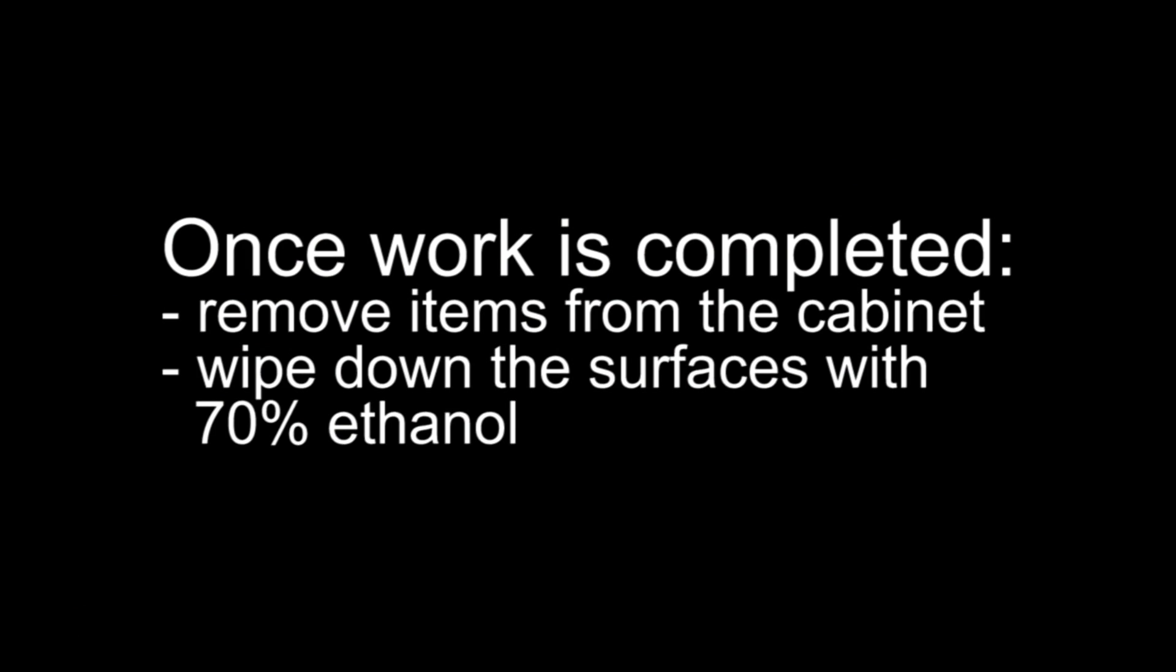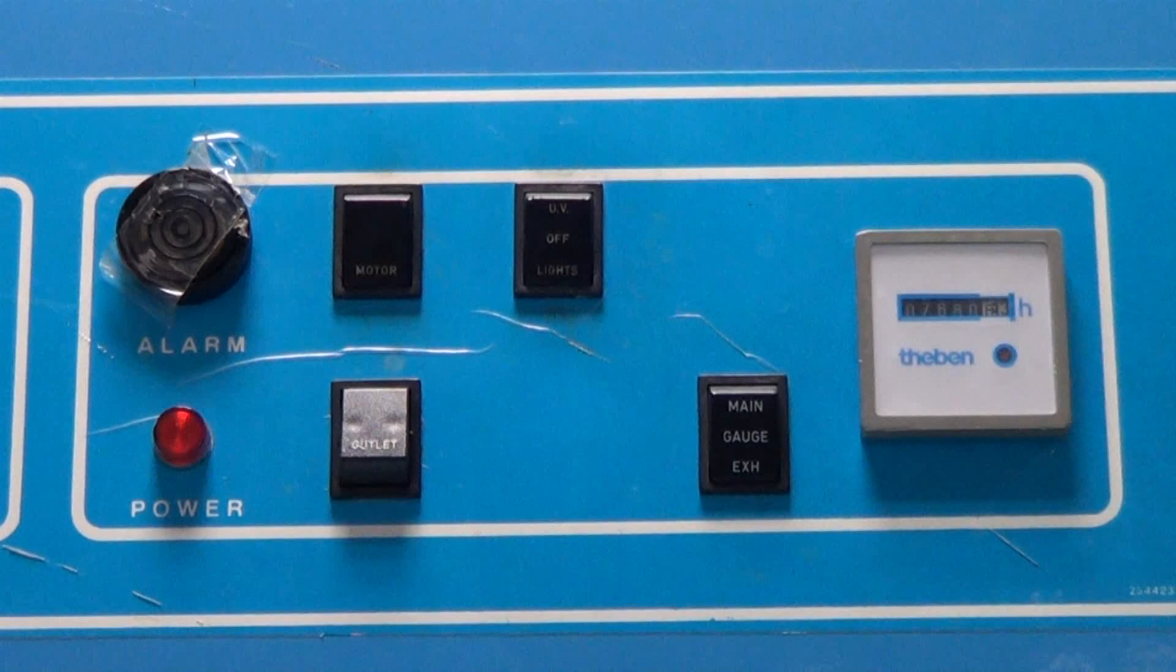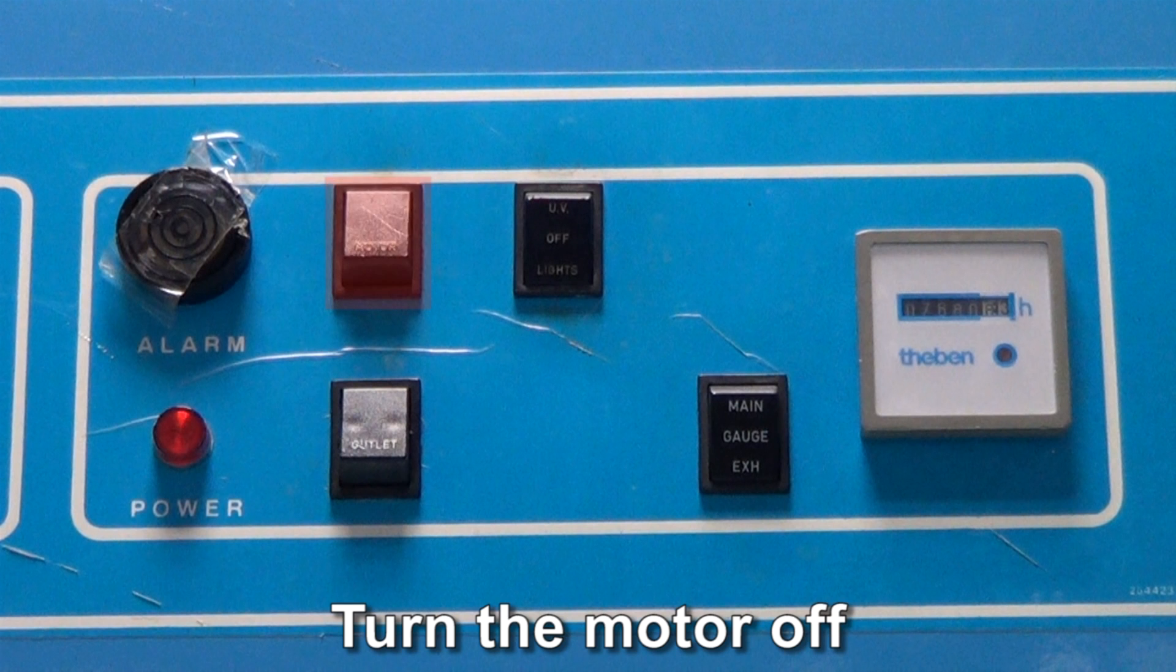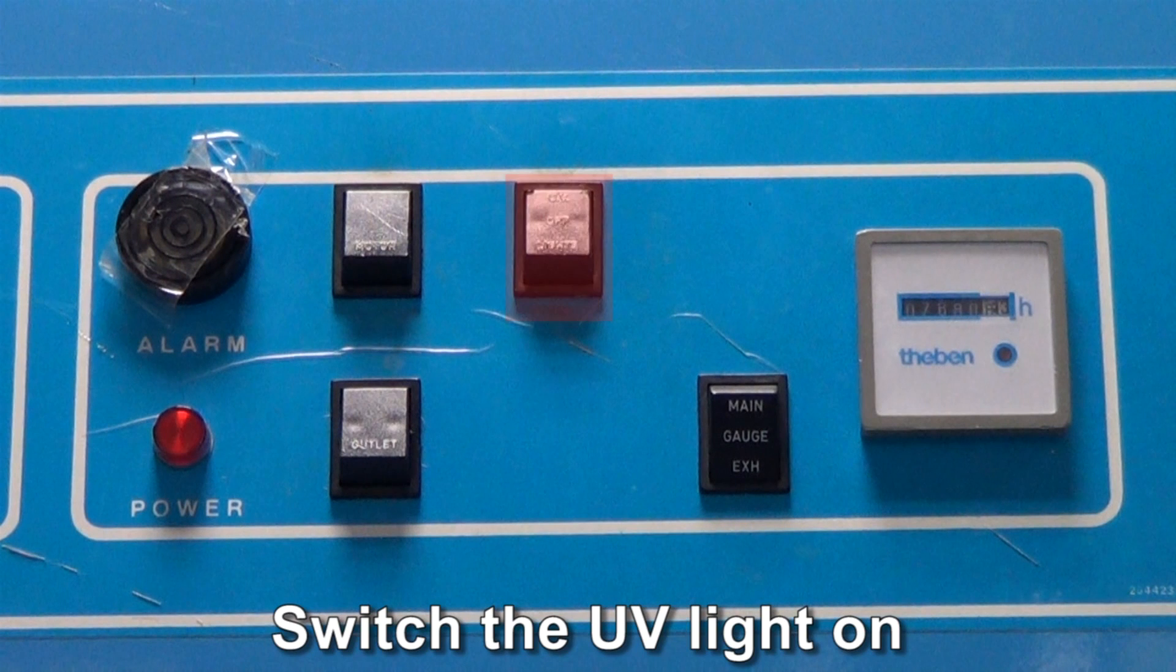Once your work is completed, remove your equipment and wipe down the surfaces of the cabinet using 70% ethanol. Turn the motor off and turn on the UV light.